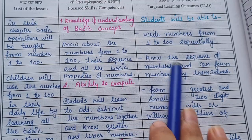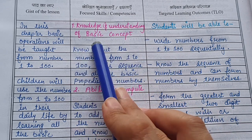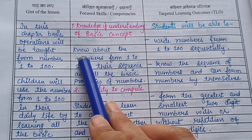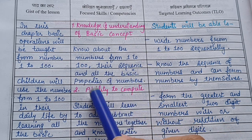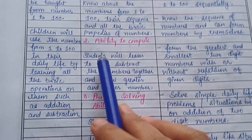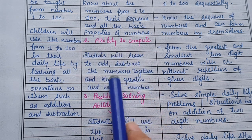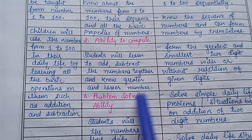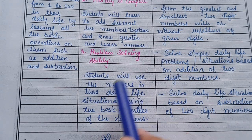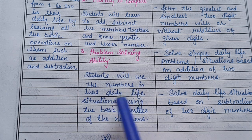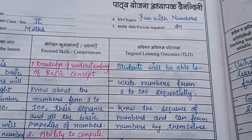Now, talking about the competencies. First: knowledge and understanding of basic concepts — students will know about the numbers from 1 to 100, their sequence, and all the basic properties. Second: ability to compute — students will learn to add and subtract numbers and identify greater and lesser numbers. Third: problem solving — students will use numbers in daily life situations using basic properties of numbers.